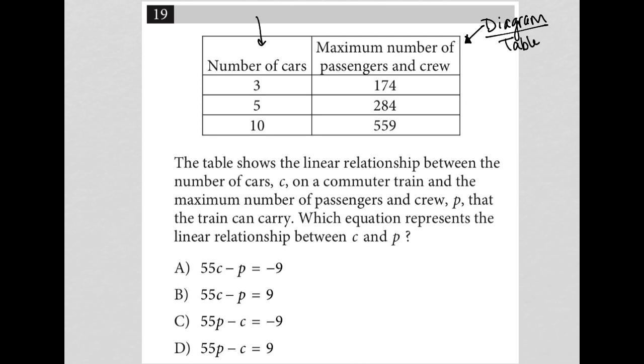The first column here is number of cars. The second column is maximum number of passengers and crew. The question says the table shows the linear relationship between the number of cars C on a commuter train and the maximum number of passengers and crew P. This is C values and these are P values for column two that the train can carry. Which equation represents the linear relationship between C and P?